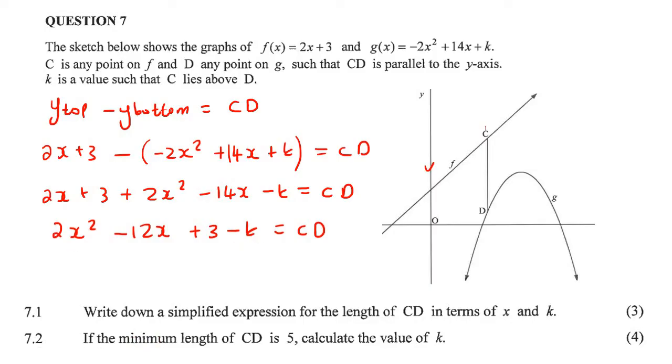They now tell us if the minimum length of CD is 5, calculate the value of k. So now they're giving us the minimum length. How would we normally find the minimum or the maximum? How do you find the minimum or maximum of a quadratic equation? Well, this is where you would just say minus b over 2a.